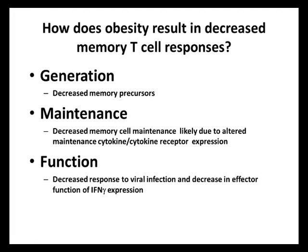Memory cells must be generated during the initial influenza infection. However, we found that obese mice generated far fewer memory T cells compared with lean mice. Once generated, the memory cells must also be maintained, and once again, the obese mice were less able to maintain the memory T cells that they had generated. Finally, the memory cells must be able to function during a secondary infection, and we found that the memory T cells generated in the obese mice were less able to respond to the influenza challenge by producing gamma interferon. Therefore, obese mice had impairment in all the properties of immune memory: generation, maintenance, and function.